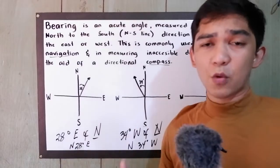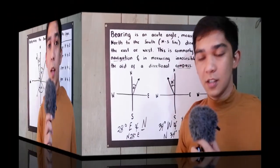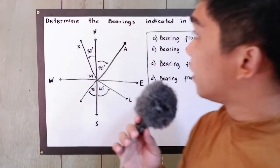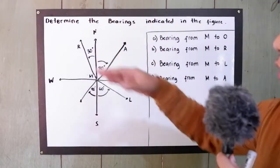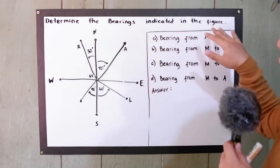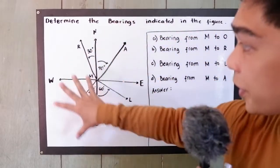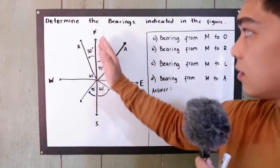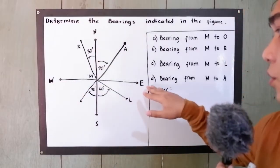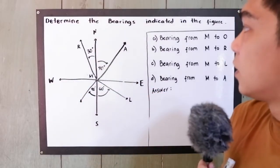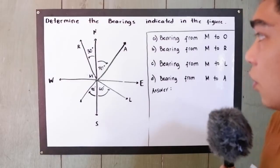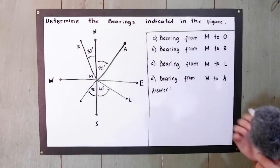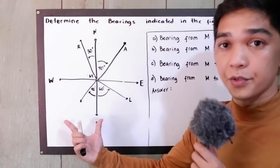Now let's have our problems and examples. Determine the bearings indicated in the figure. We have our vertical north-south line and the west-to-east line. We are going to find bearings A, B, C, and D given this illustration.